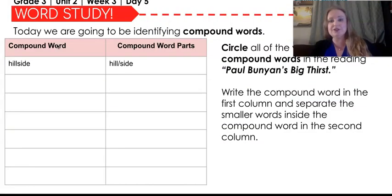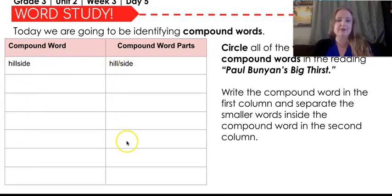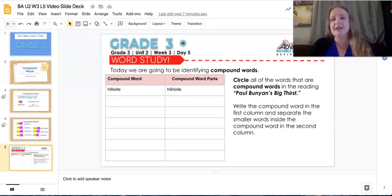So now it's your turn to try it. Today you're going to be identifying the compound words in your story, Paul Bunyan's Big Thirst. So go to the story and circle all the words that are compound words. Then come back here to your Google Slides and write the compound words in this column, and then separate them with a slash with the first word here and the second word there in the next column. I did the first one for you already. You're welcome. Let's try it.